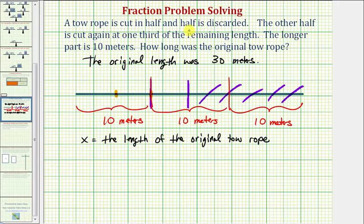And now from the problem, we'll set up an equation that we can solve for x. So again we're told the tow rope is cut in half and half is discarded. The other half is cut again at one third of the remaining length. The longer part is 10 meters.